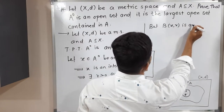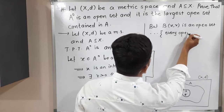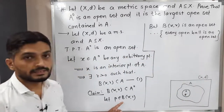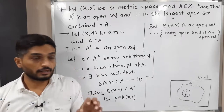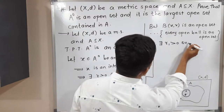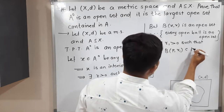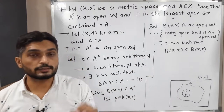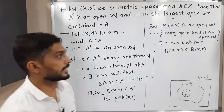B(x, r) is an open set, since every open ball is an open set. So B(x, r) is also an open set, and we have selected one point p from B(x, r). By definition of open set, there exists r₁ greater than 0 such that B(p, r₁) ⊆ B(x, r). We could write this because B(x, r) is an open ball, and every open ball is an open set. So by definition of open set, we can find some radius r₁ such that the open ball with center p and radius r₁ is a subset of B(x, r). I am calling this equation 2.